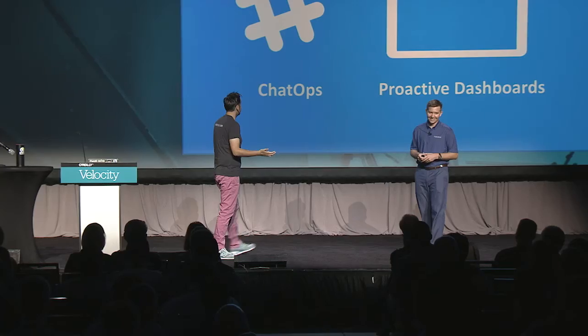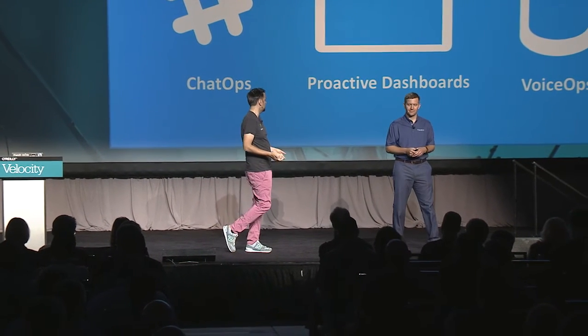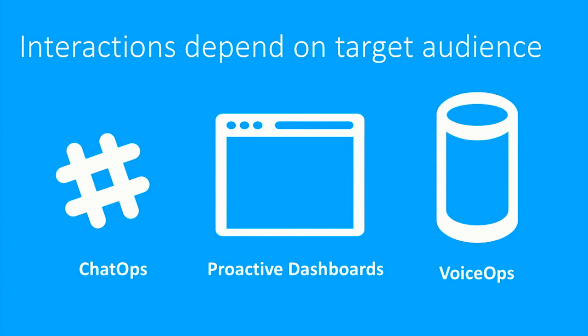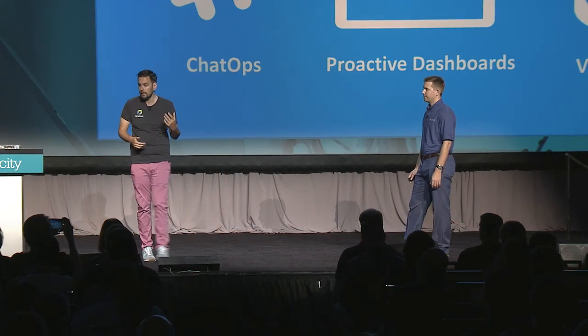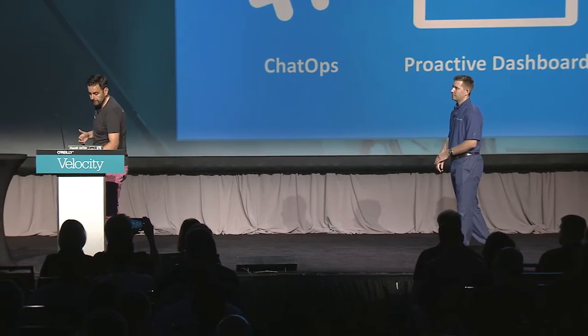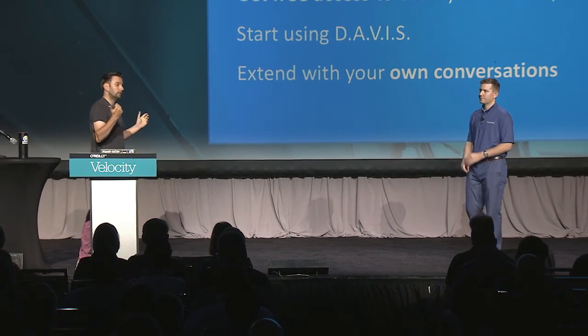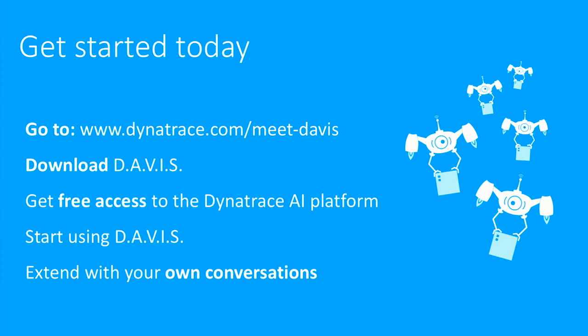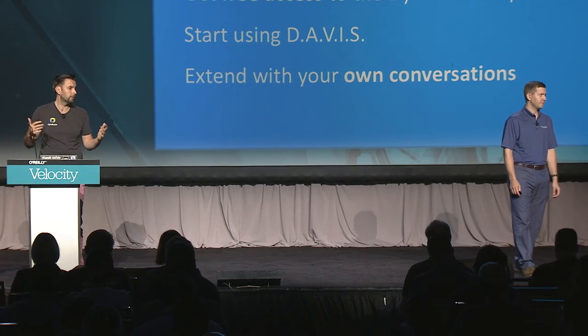As you can see, the interactions really depend on your target audience, your context, and your situation. What we're building offers a chatbot interface, proactive dashboards — because it also makes sense for Davis to speak up when there's a problem rather than wait for you to ask — plus the voice piece. If you'd like to test it out, go to dynatrace.com/meet-Davis to register and get access. You can download it, and since the conversational interface alone isn't that much fun without the backend, we also give you free access to the Dynatrace AI platform. It's all on GitHub — an open source project where you can extend Davis with your own conversations. Go there, sign up, and let us know what you think.